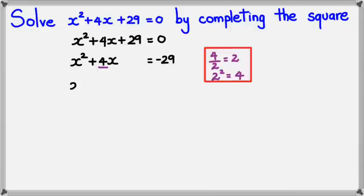So I've got x² + 4x = -29, adding 4 to the left-hand side and adding 4 to the right-hand side, just so the equation is still the same.